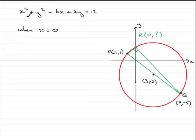So if we do that, we're going to get 0 plus y squared, so we've got y squared. This goes out, we're left with 4y, and then equals 12.